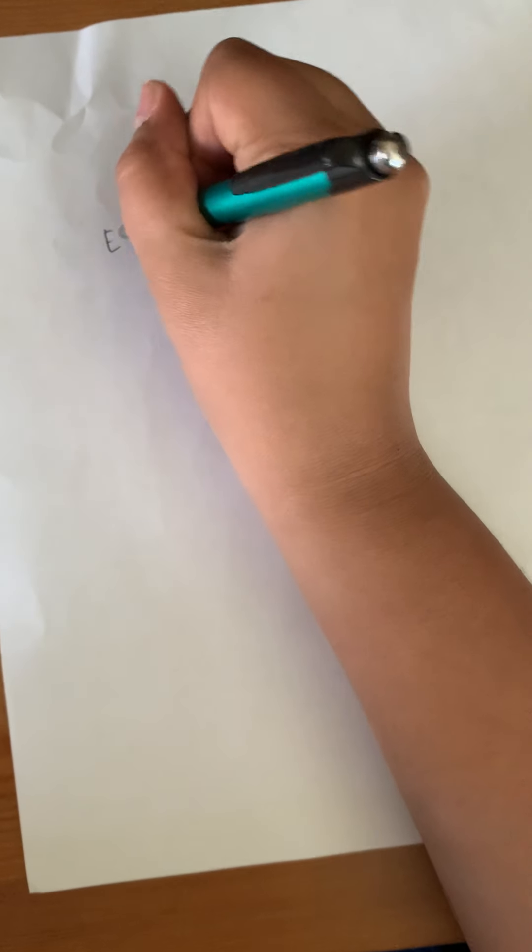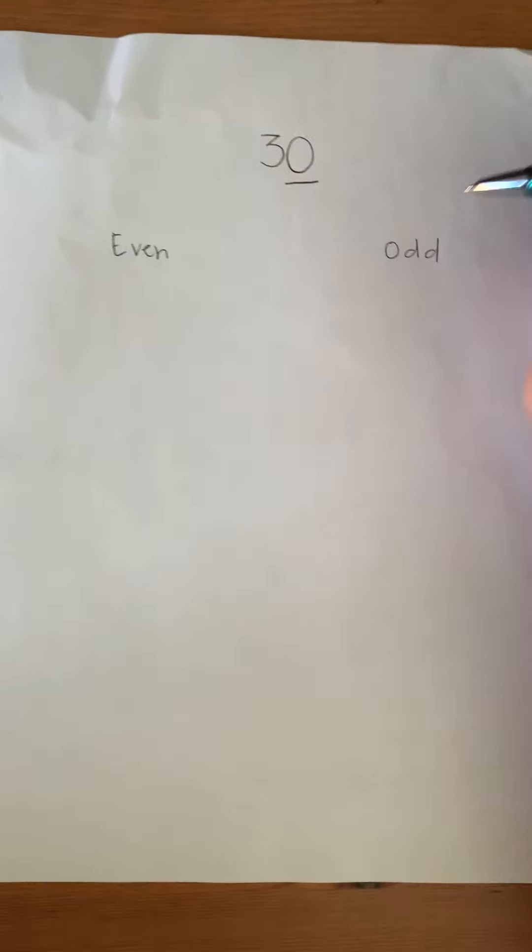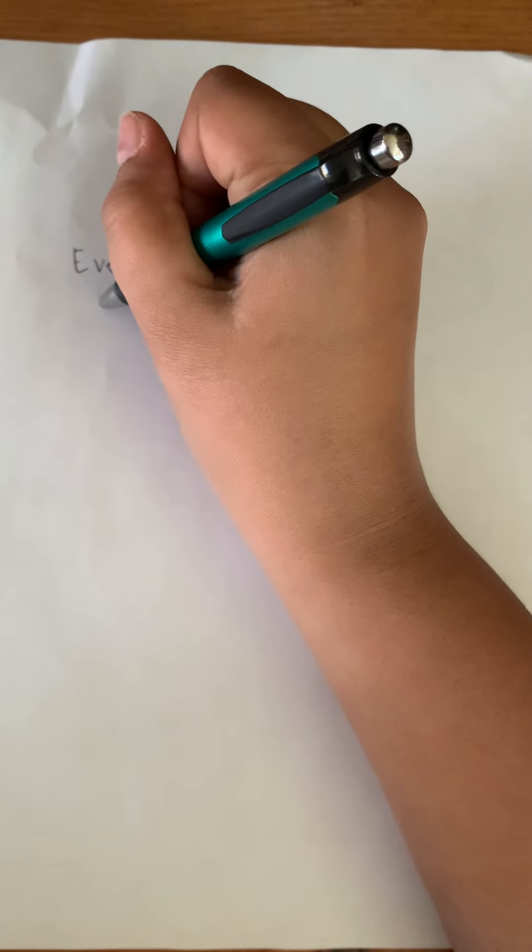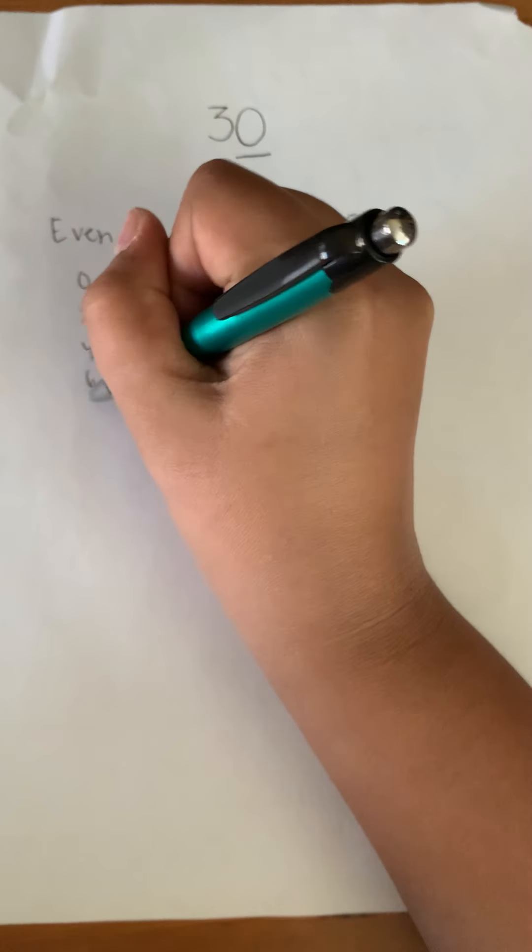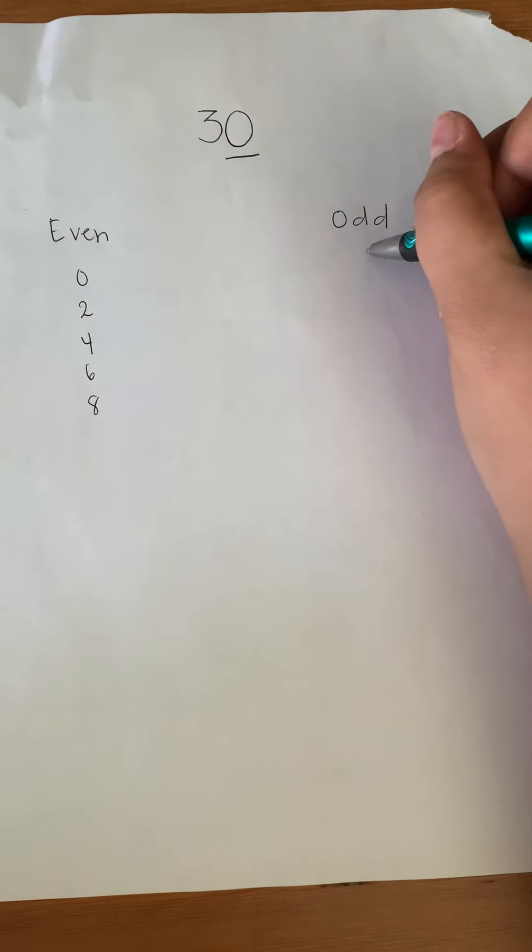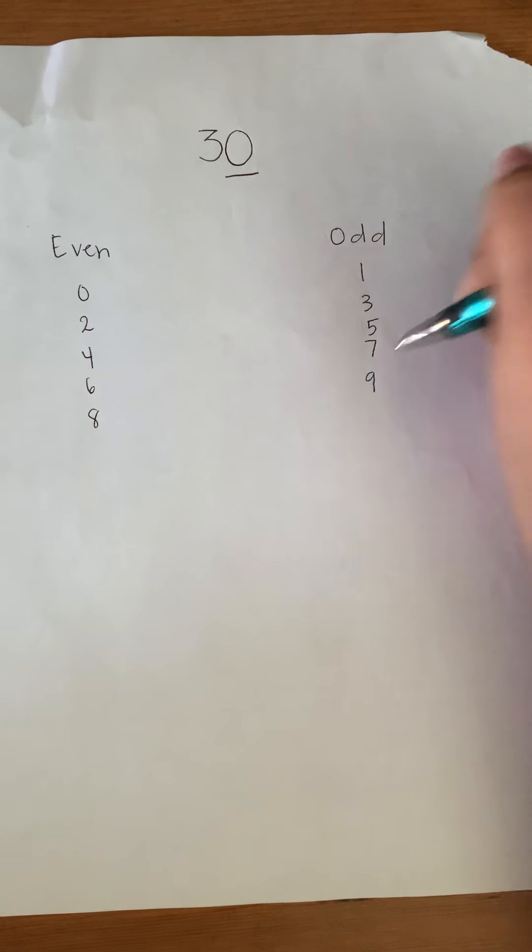So we're going to write even. Remember, you don't have to write this. You're just watching this part, just like we would do in class. Even numbers are 0, 2, 4, 6, 8. Odd numbers are 1, 3, 5, 7, and 9.